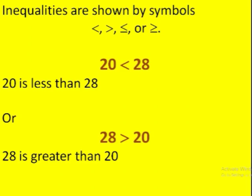But we have these four symbols which are used for inequalities — it means something is either larger than the other one or smaller than the other one. So in the first example, 20 is less than 28. This symbol means 'is less than.' The same symbol when it is flipped becomes 'is greater than,' so 28 is greater than 20.